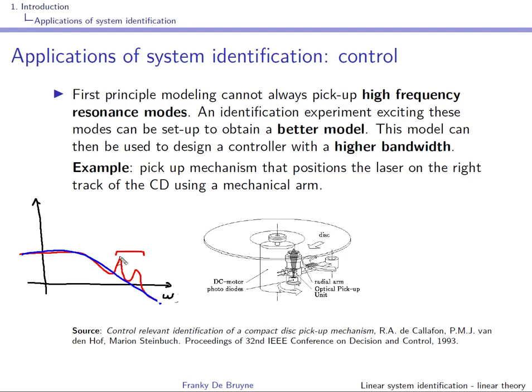This is where system identification can offer a solution. If you design an experiment that excites those modes, you can use system identification to identify a model that picks up the high-frequency resonance modes. One of the earliest examples is the joggable CD player — a CD player for jogging, where control engineers needed a robust controller for the pickup mechanism and required a model capturing high-frequency resonant modes using data-driven system identification.